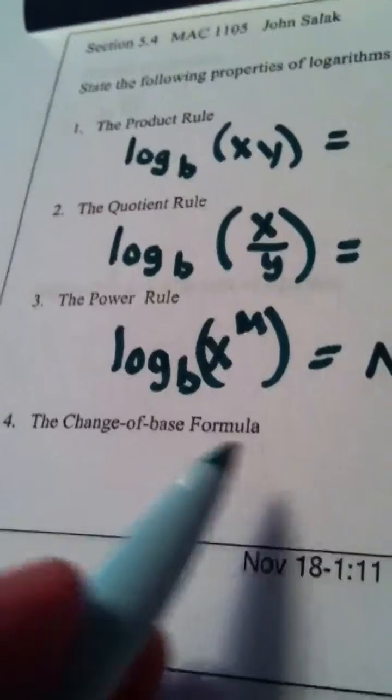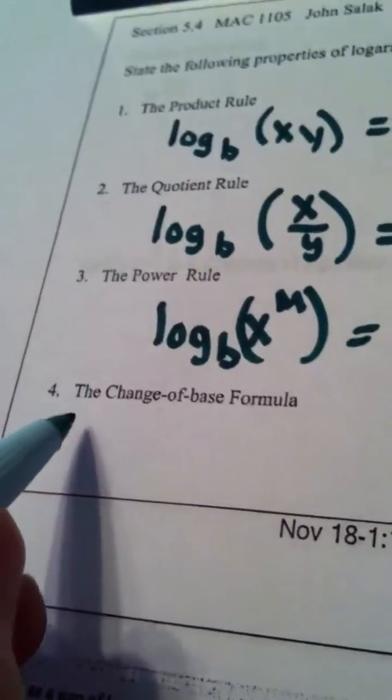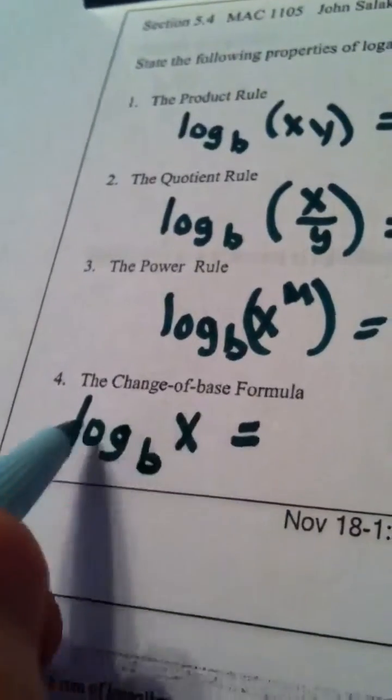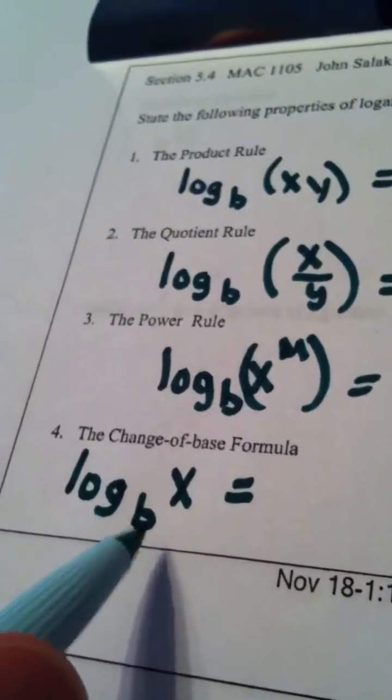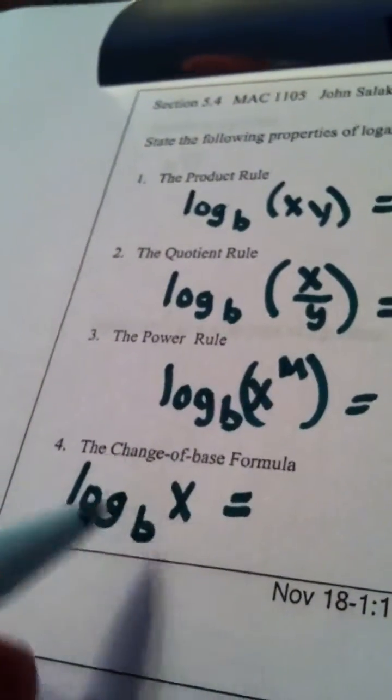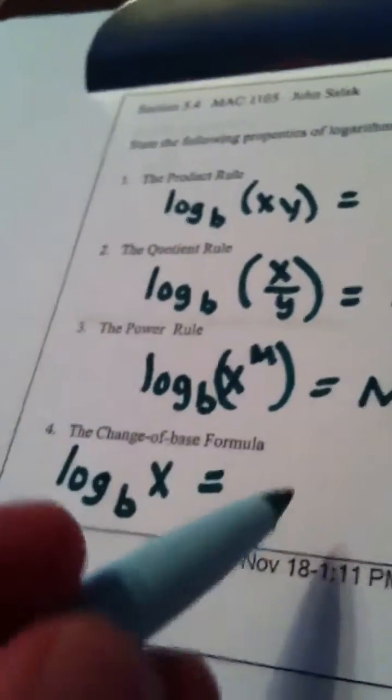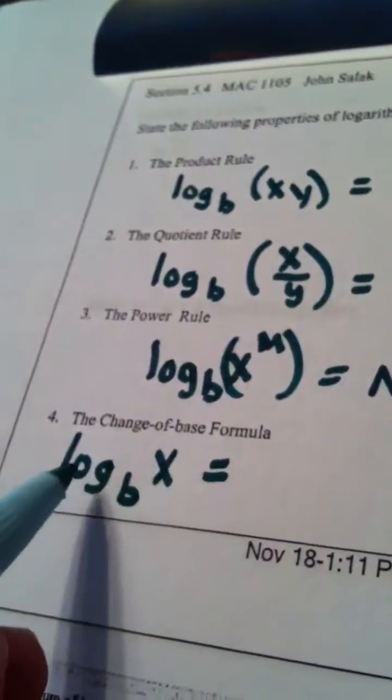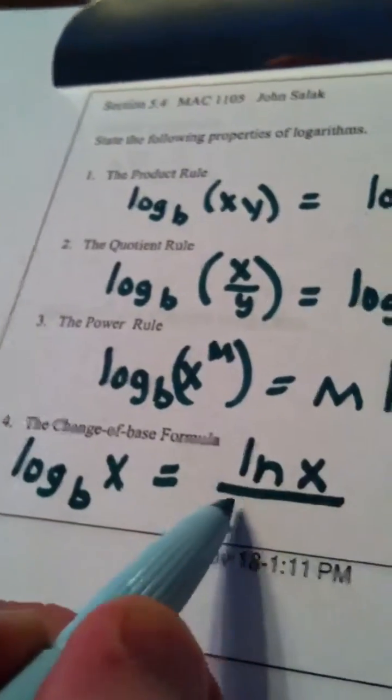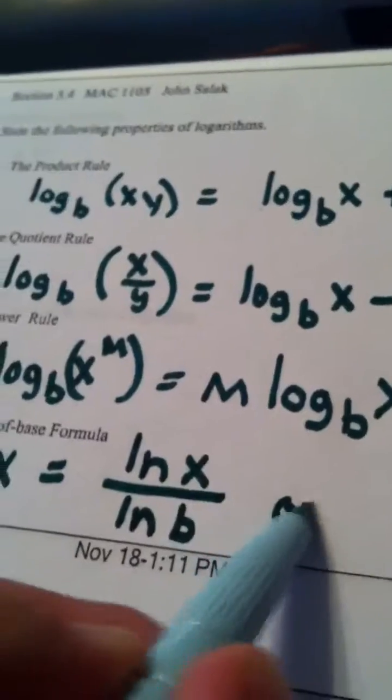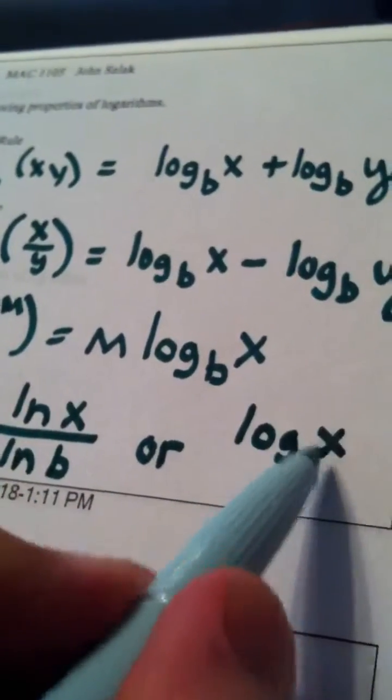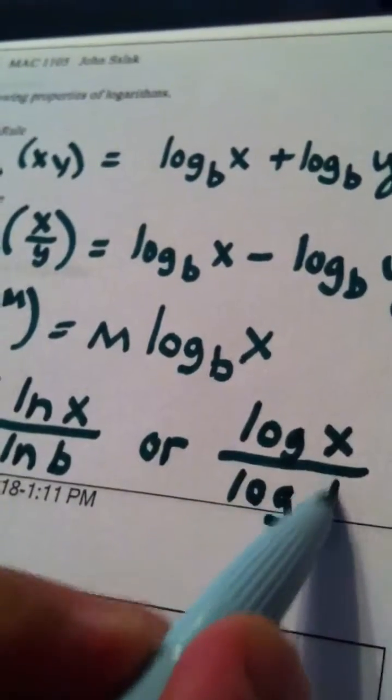And the last rule, the change of base formula, basically says—if I have a log function whose base is not 10 or e, and I want to use my calculator to do something with that log function to approximate it or to graph it, I apply the change of base formula. Log base b of x equals the natural log of x divided by the natural log of b, or the common log of x divided by the common log of b.